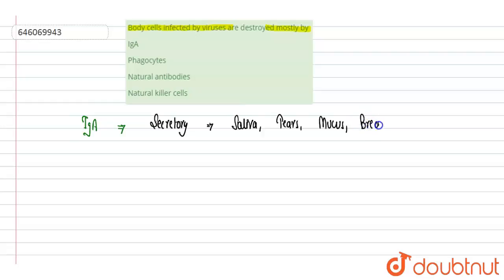It mainly protects against various kinds of bacteria and bacterial infections. It counters mainly against bacteria. So this is incorrect, because we have to find out which one can destroy body cells infected by viruses. This is incorrect. Next, we have phagocytes.